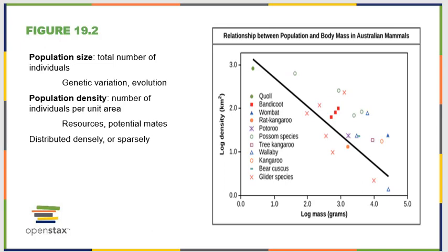We study size for obvious reasons, but we also know that genetic variation is greater in larger populations and that the impact of evolution tends to be greater in smaller populations. Population density is something we study because we look at how many resources and how many potential mates there are. Everything we define in this chapter has a very applicable logic behind it.